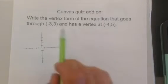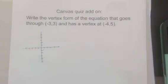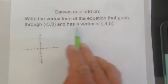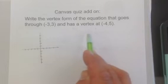Okay, this is an example problem exactly like one off of your Canvas quiz. I call this Canvas quiz add-on. So let's do it. Write the vertex form of the equation that goes through negative 3, 3 and has a vertex at negative 4, 5.